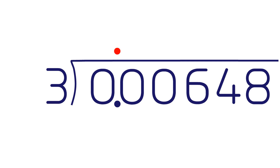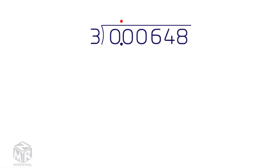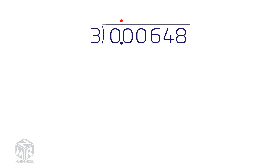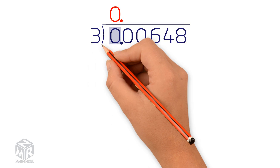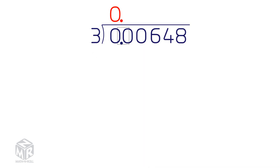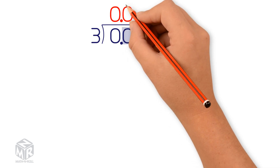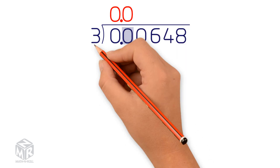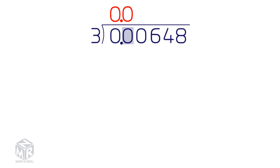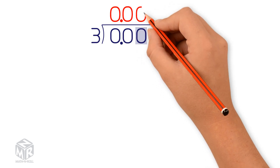First, we ask ourselves how many times 3 goes into 0. None, because 0 is less than 3, so we write a 0. Next, we ask ourselves how many 3's are in the next 0. Also 0, so we write a 0 directly above the 0. Now we do the same thing for the next 0. Don't forget to write the 0 directly above the 0.